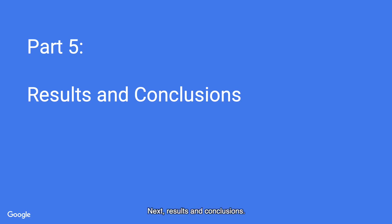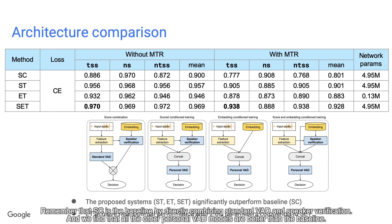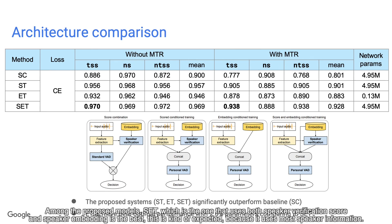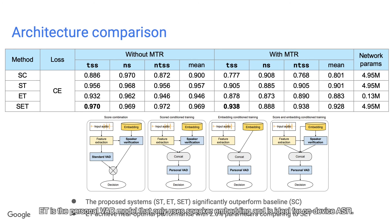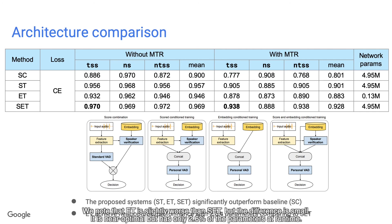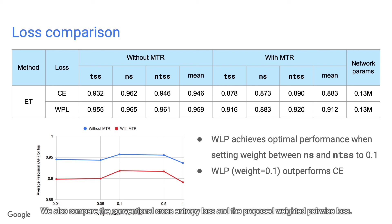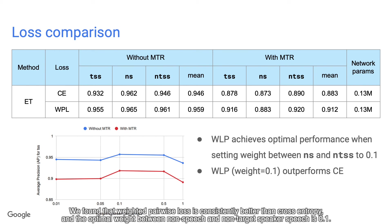Now, results and conclusions. First, we compare different architectures. SC is the baseline of directly combining standard VAD and speaker verification, and we find that all other Personal VAD models are better than the baseline. Among the proposed models, SET — which uses both speaker verification score and speaker embedding — is the best, as expected because it uses the most speaker information. ET is the Personal VAD model that only uses speaker embedding and is ideal for on-device ASR. ET is slightly worse than SET, but the difference is small — it is near optimal but has only 2.6% of the parameters at runtime. We also compare conventional cross-entropy loss and the proposed weighted pairwise loss, finding that weighted pairwise loss is consistently better, with the optimal weight between non-speech and non-target speaker speech being 0.1.